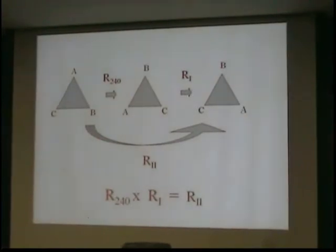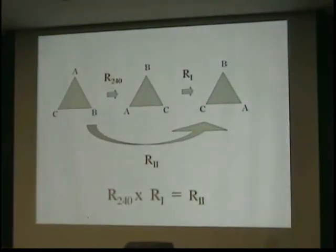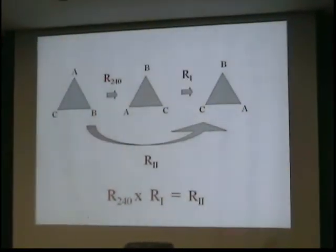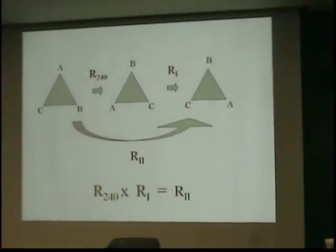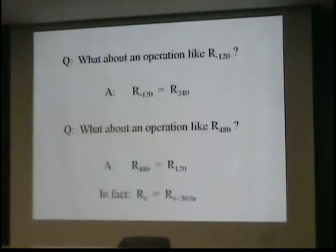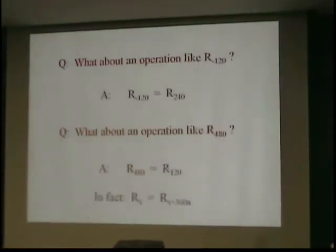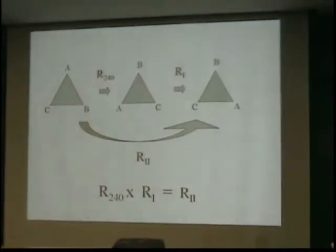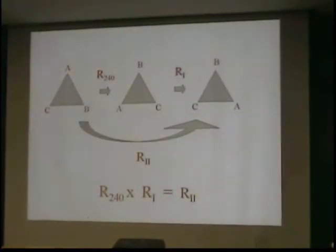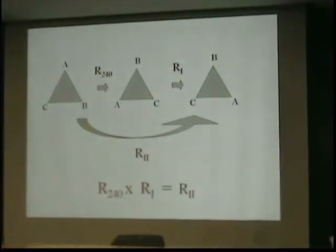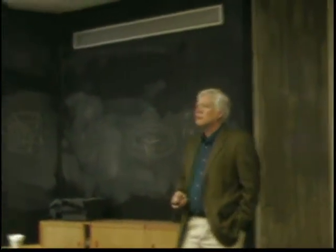So now I do a reflection about 1. B stays put, but C and A interchange. So ABC ends up as BAC after doing a rotation through 240, followed by a reflection about 1, without hitting the reset button. And if we went to our table, and we look it up, we'll see that for a reflection about axis 2, we'll get BAC. And that's what we got. We got BAC. Therefore, we've solved the equation. Rotation through 240 times a reflection about 1 gives me a reflection about 2.